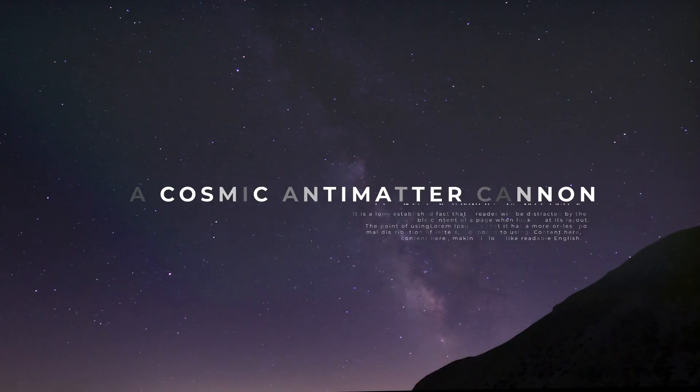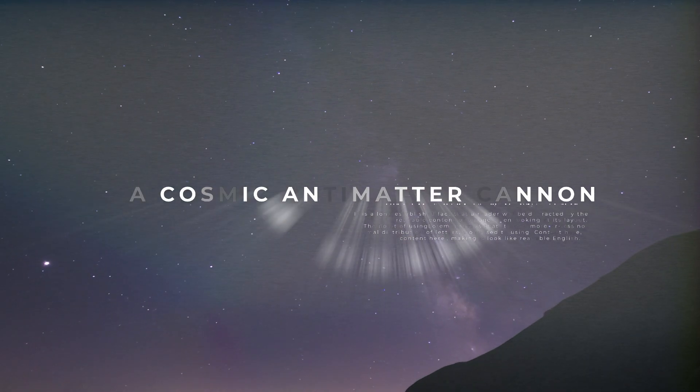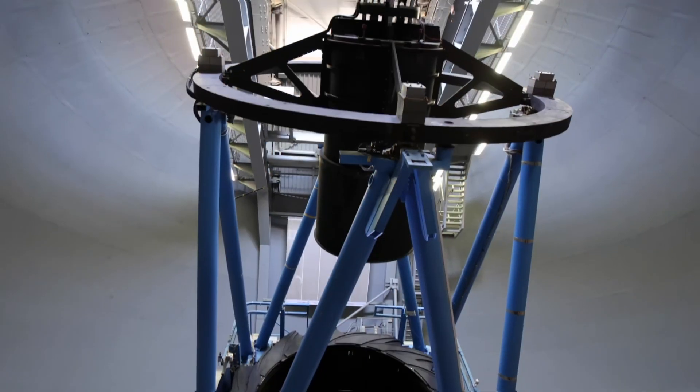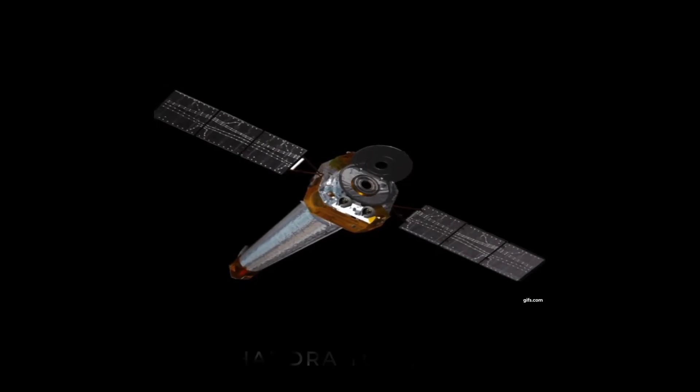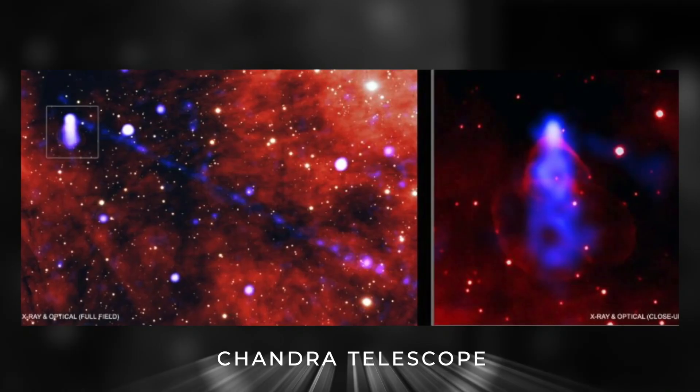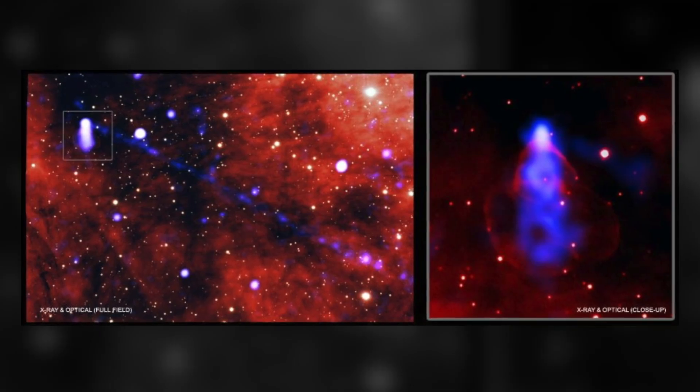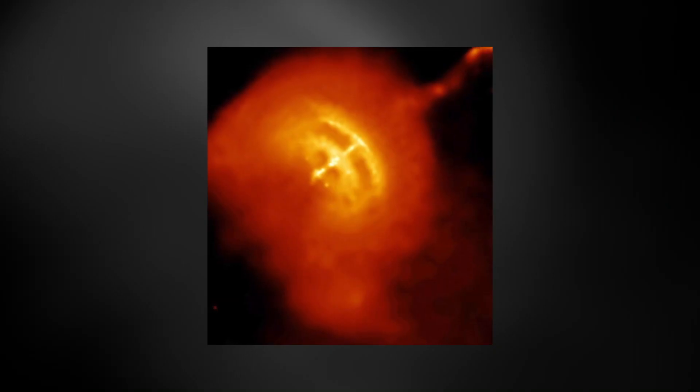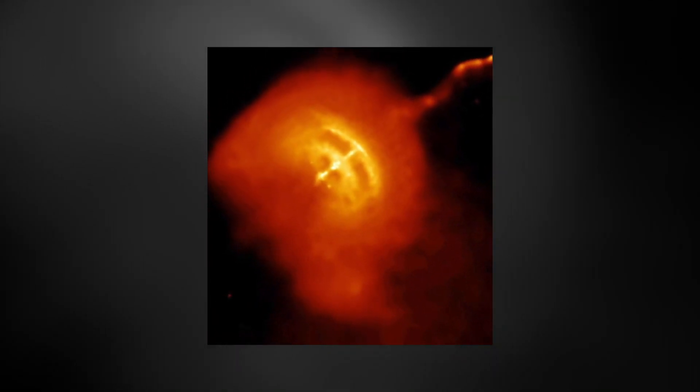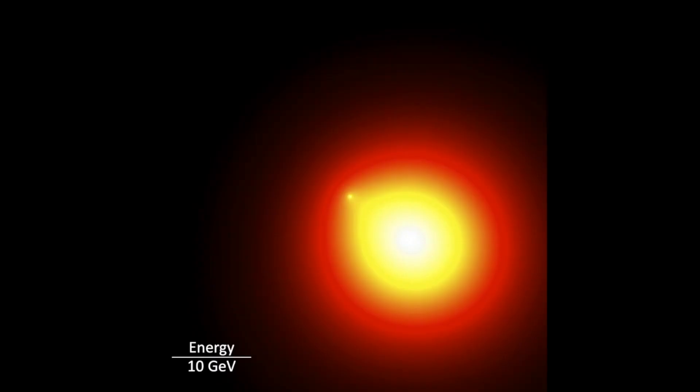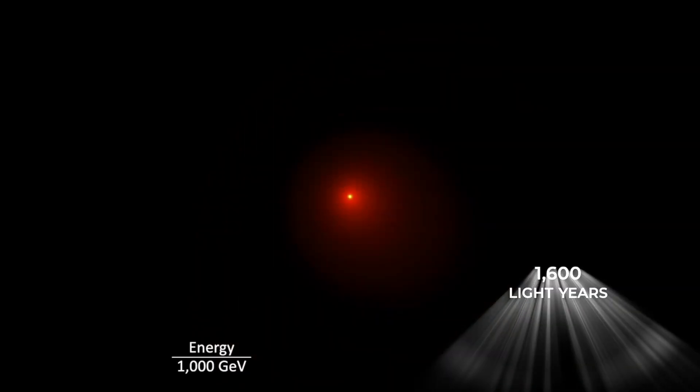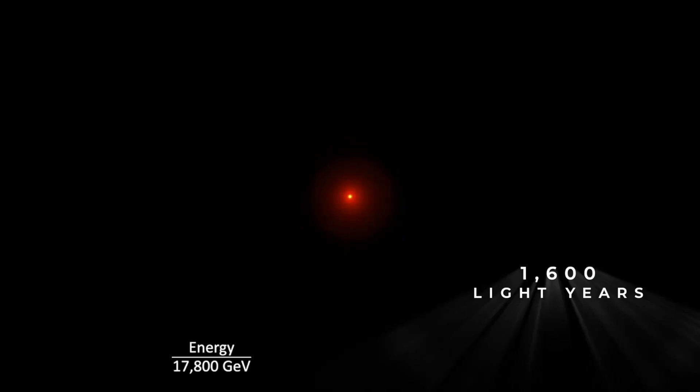Number 4. A Cosmic Antimatter Cannon. While astronomers searched the skies using the Chandra telescope, they discovered an extremely rare type of pulsar activity creating antimatter. The more recent look at the pulsar this year confirmed that the massive beam contains several types of high-energy particles located 1,600 light-years away from Earth.